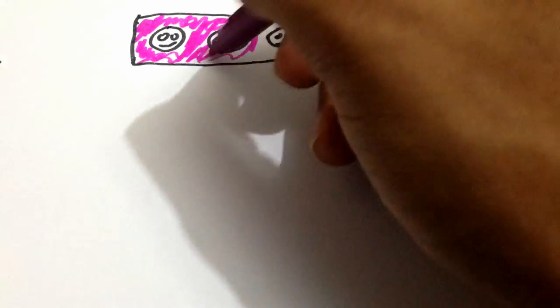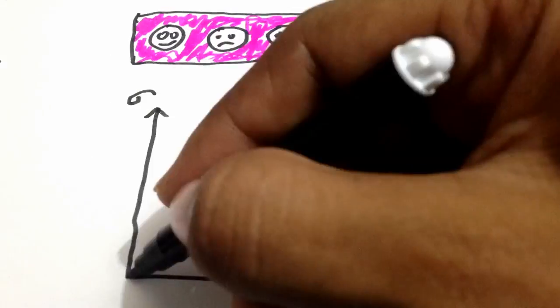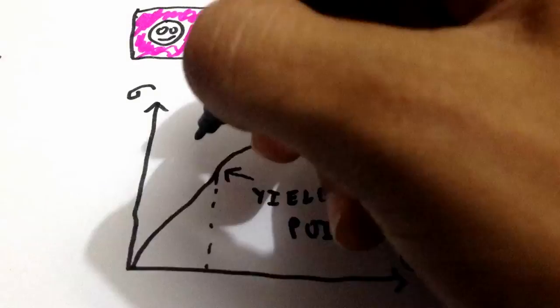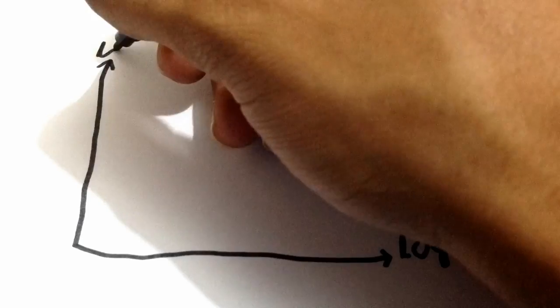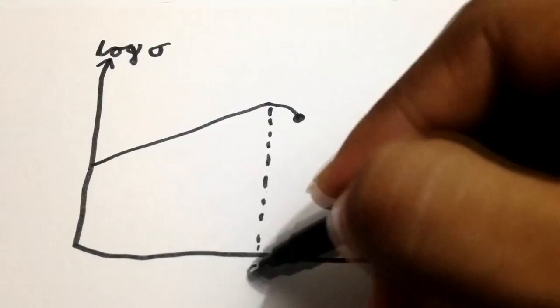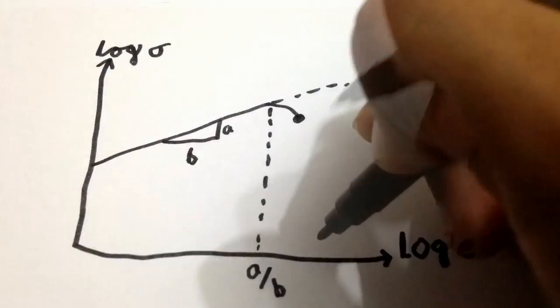Let's take a step away and jump into the metal behavior in metal forming, which can be obtained from the stress strain curve normally divided into an elastic region and a plastic region. The curve after the yield point is then plotted on a log-log scale, which gives a linear relationship given by sigma equal to K into e power n.